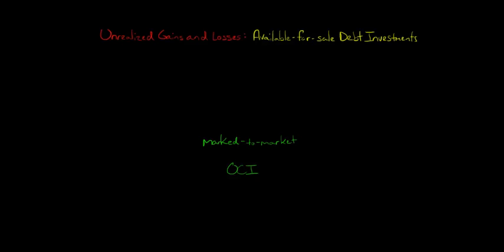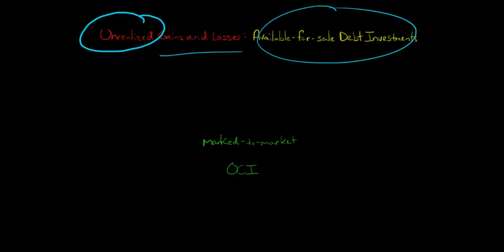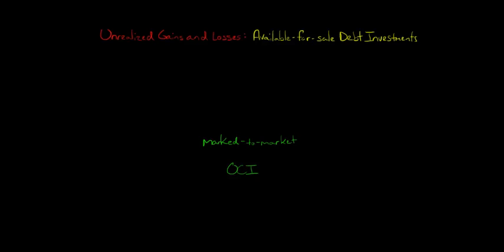In this video, I'm going to show you how to account for unrealized gains or losses on available-for-sale debt investments. Available-for-sale debt investments are marked to market on the balance sheet, meaning they're presented at fair value. We have to make changes at the end of each period to ensure they're at fair value. Any unrealized gains or losses go through other comprehensive income, not net income. They won't show up in the income statement.